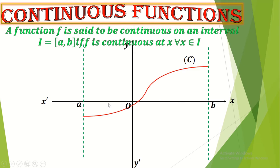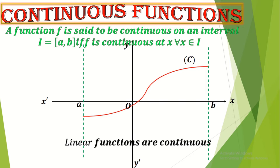When do we say that a function is continuous on an interval I = [a, b]? A function is said to be continuous on an interval I when it is continuous at every point included in this interval. Note that linear functions are continuous.